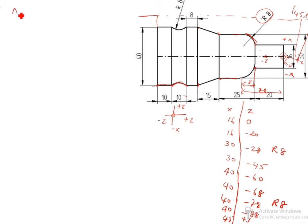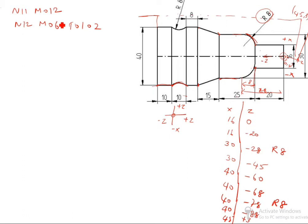We have to write the program now. We will start from N11. Previously we wrote N01; now we start it as N11. N21, 22, 23 also you have to write. N11: M012 — M012 is clamping the workpiece. N12: M06 T0102 — M06 is tool change, T0102 is the tool number. We can write T0105 or T0103 also.